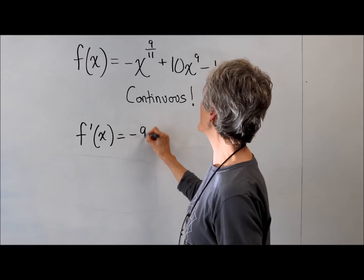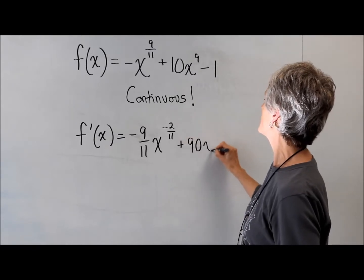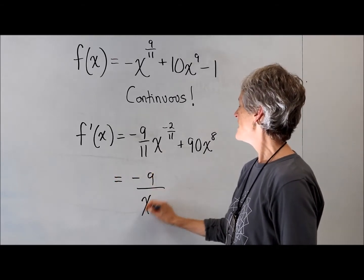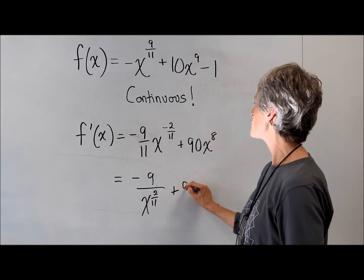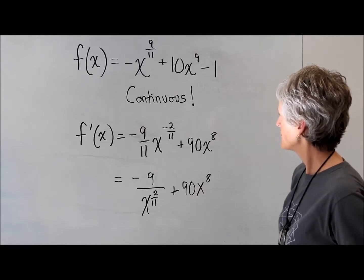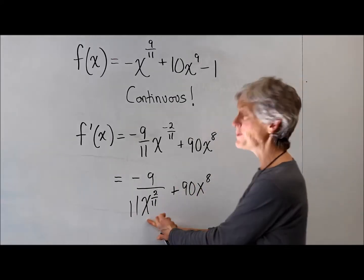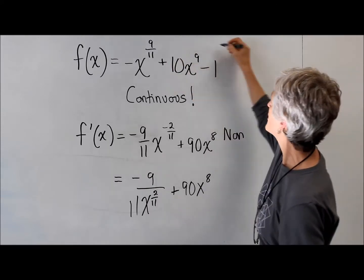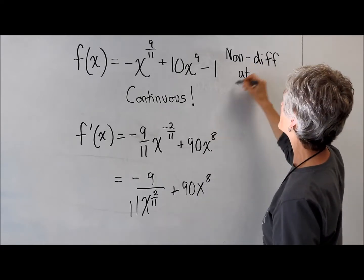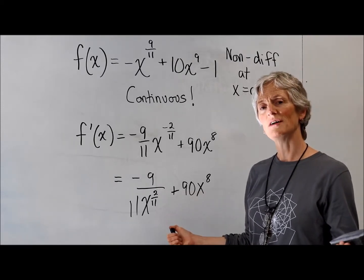Just a little power rule action here — I'm going to subtract one from the exponent. Do you see what I see, Mr. Haas? I do. What is that negative exponent doing? You're going to have an x in the denominator there, of course. That's going to give me an x in the denominator, which means right away I'm going to have a problem. There should be a negative nine-elevenths coefficient out front. I'm going to have a problem when x equals 0. So this original function is non-differentiable at x equals 0, because the derivative does not exist at 0.